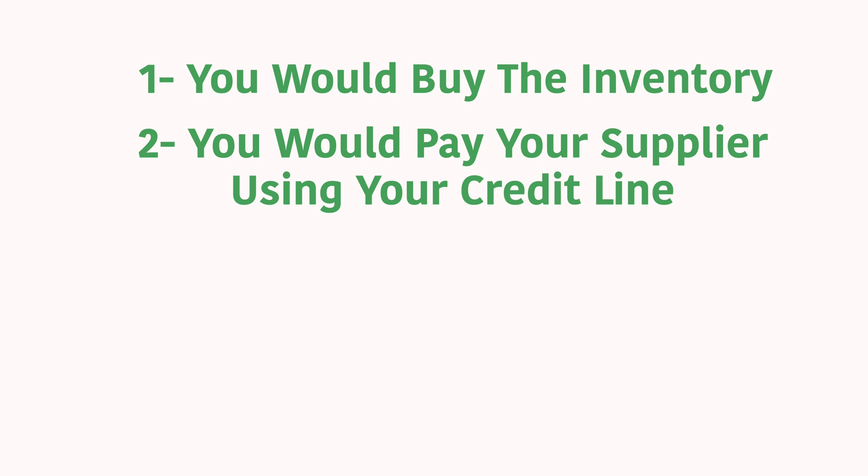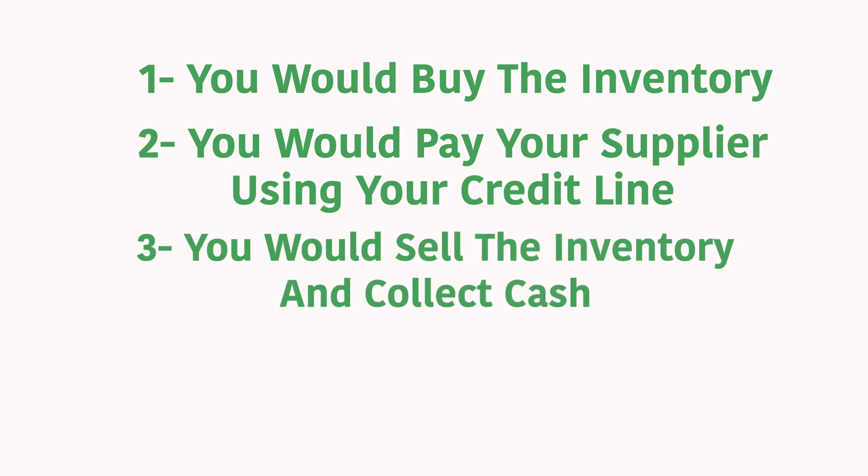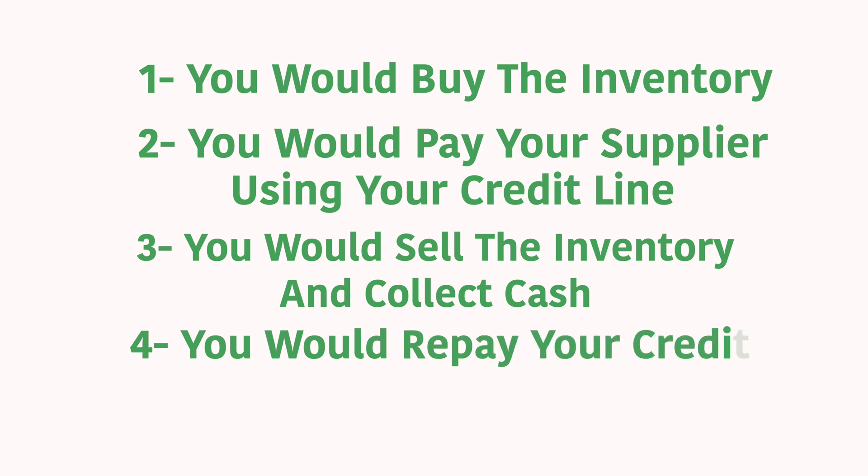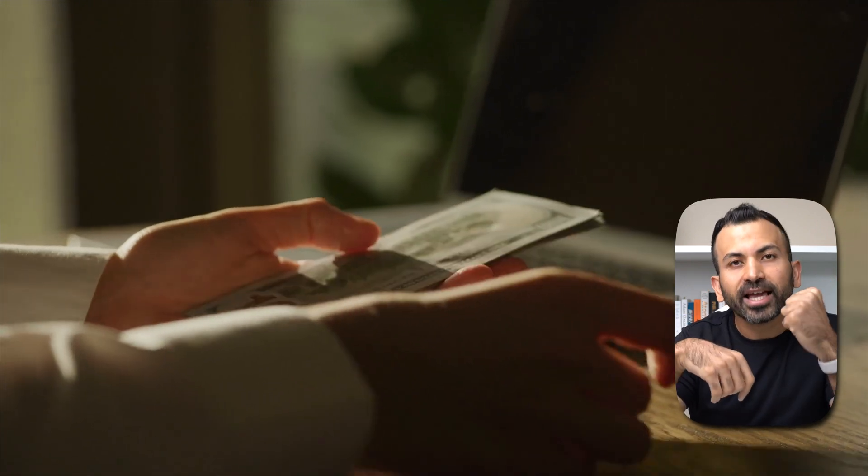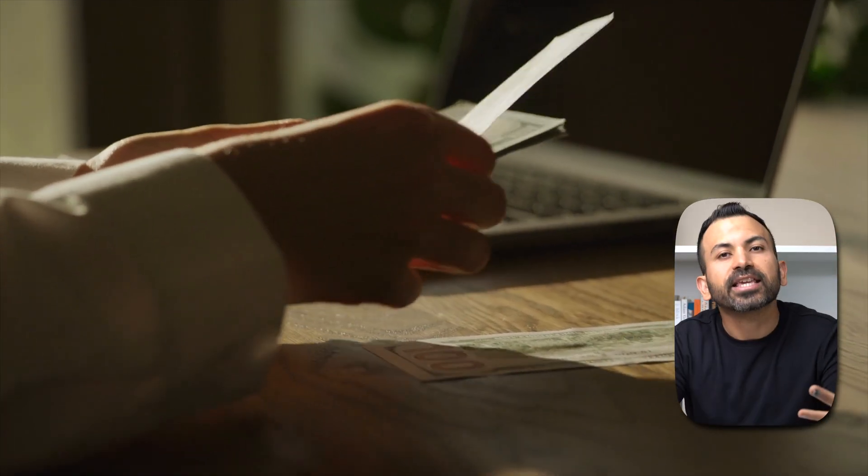The second strategy is to use a credit line or financing from a bank. The steps are: number one, buy your inventory; number two, pay your supplier using your credit line; number three, sell the inventory and collect cash from your customers; and number four, repay your credit line. You don't need to contribute your own savings. Instead, you use the bank's money to pay your supplier, collect cash from customers, repay the credit line, and keep your profit.